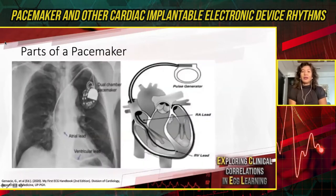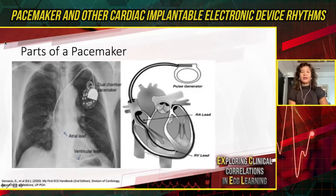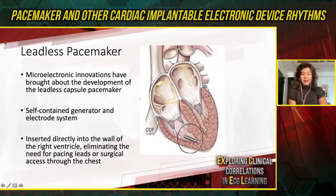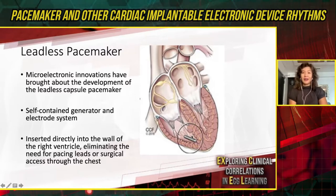There are two general parts to a pacemaker. There's the generator that is implanted under the skin, which is connected to one or two leads that are positioned in the right atrium and the right ventricle. In the last five years, a leadless pacemaker was invented, implanted directly onto the right ventricular myocardium and attached through nitinol tines. It does away with problems of pocket and leads.